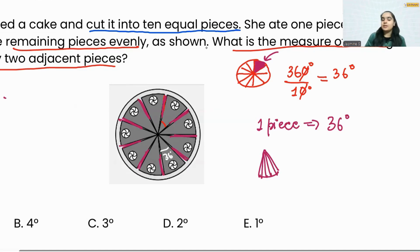So that single piece, the gap that it was taking, has now been split into nine parts. That means one gap between any two adjacent pieces is going to be 36 divided by 9, which is 4 degrees.